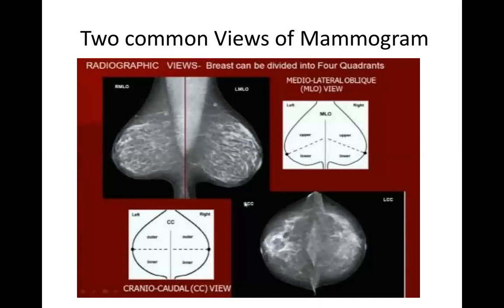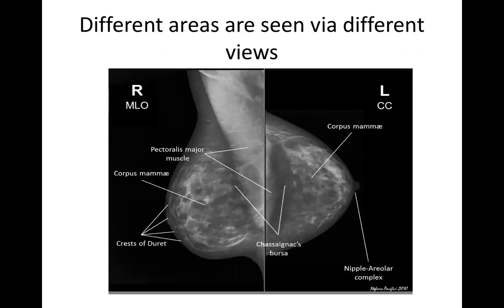There are different views of a mammogram needed because the breast is divided into four quadrants and it is not possible to view all four quadrants in one view. So we get two views: the craniocaudal view — that is the CC view — and the mediolateral oblique or MLO view. The CC view gives a better idea of the whole breast and the nipple-areolar complex, while the MLO view also helps you see the part of the axilla and pectoralis major muscle, so if lymph nodes are enlarged you can see them as well.